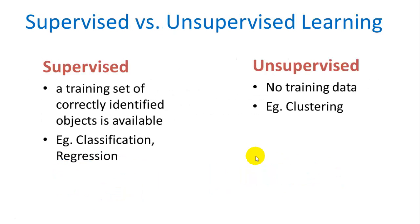Supervised versus unsupervised learning. Supervised learning just means that you have a training set of data of correctly identified objects. So we know the type of each of these training set. So for example, classification or regression. In unsupervised learning, we don't have a training set. We just have a bunch of raw data and we need to try to cluster it.